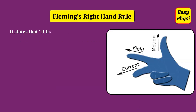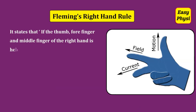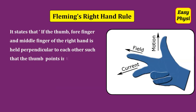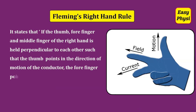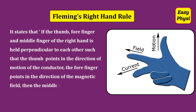Fleming's Right Hand Rule: It states that if the thumb, forefinger and middle finger of the right hand are held perpendicular to each other such that the thumb points in the direction of motion of the conductor and the forefinger points in the direction of the magnetic field, then the middle finger shows the direction of induced current.